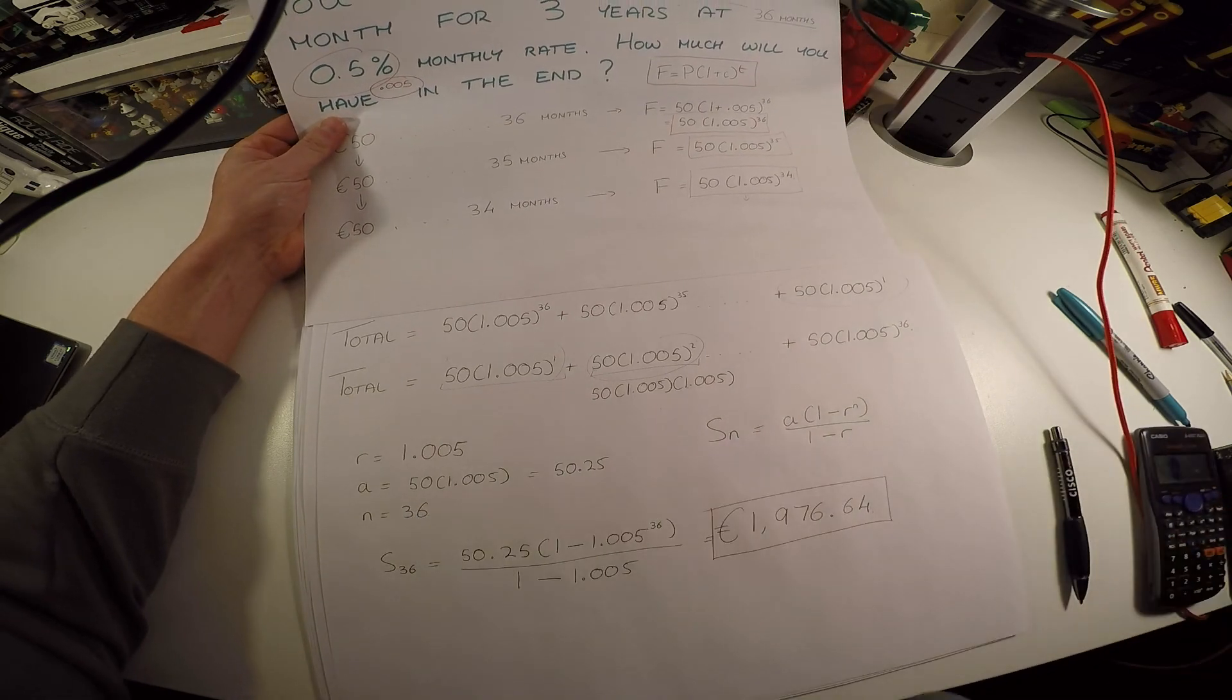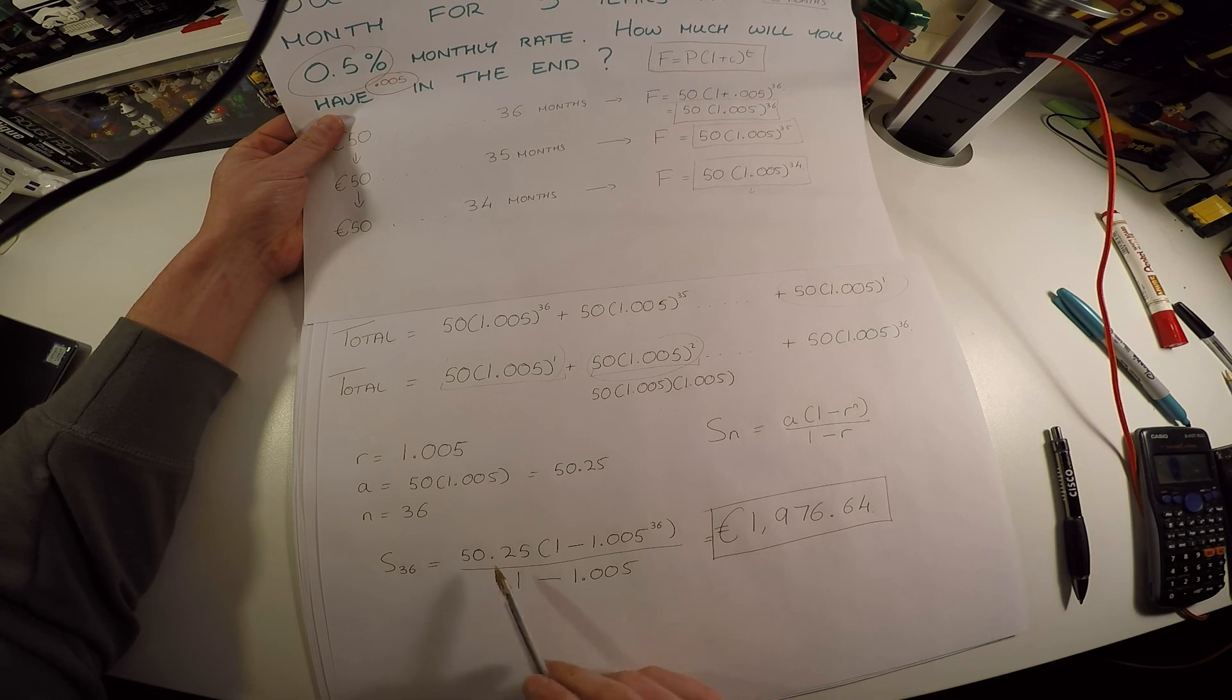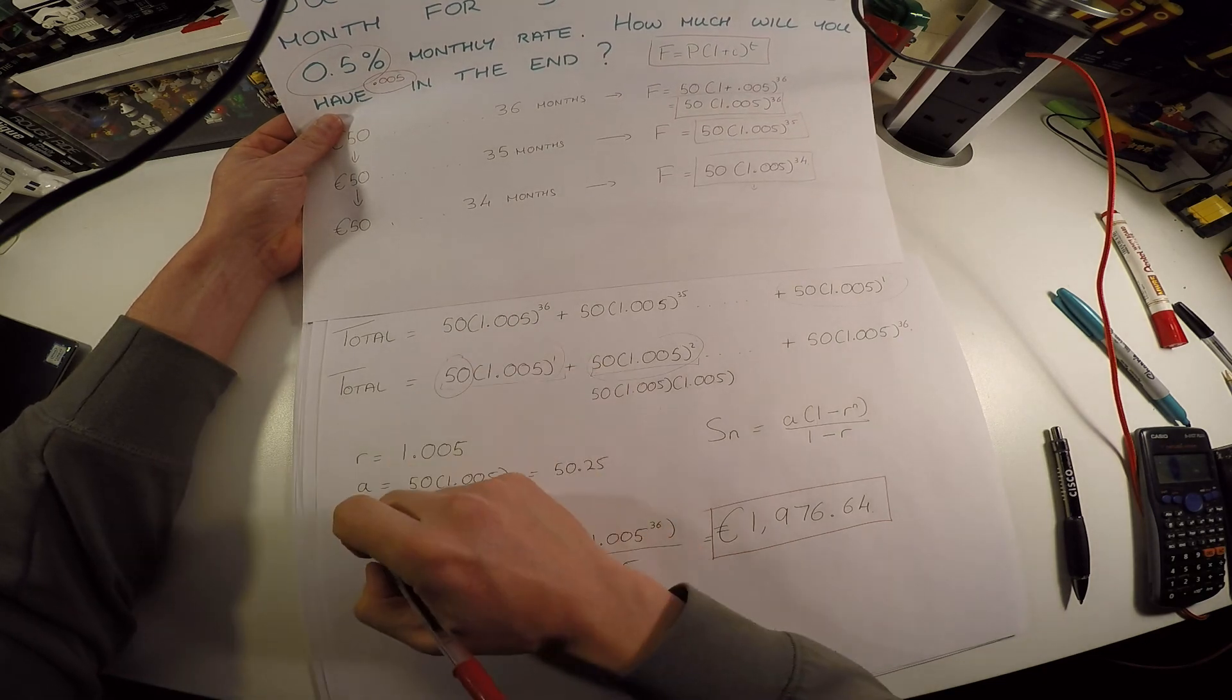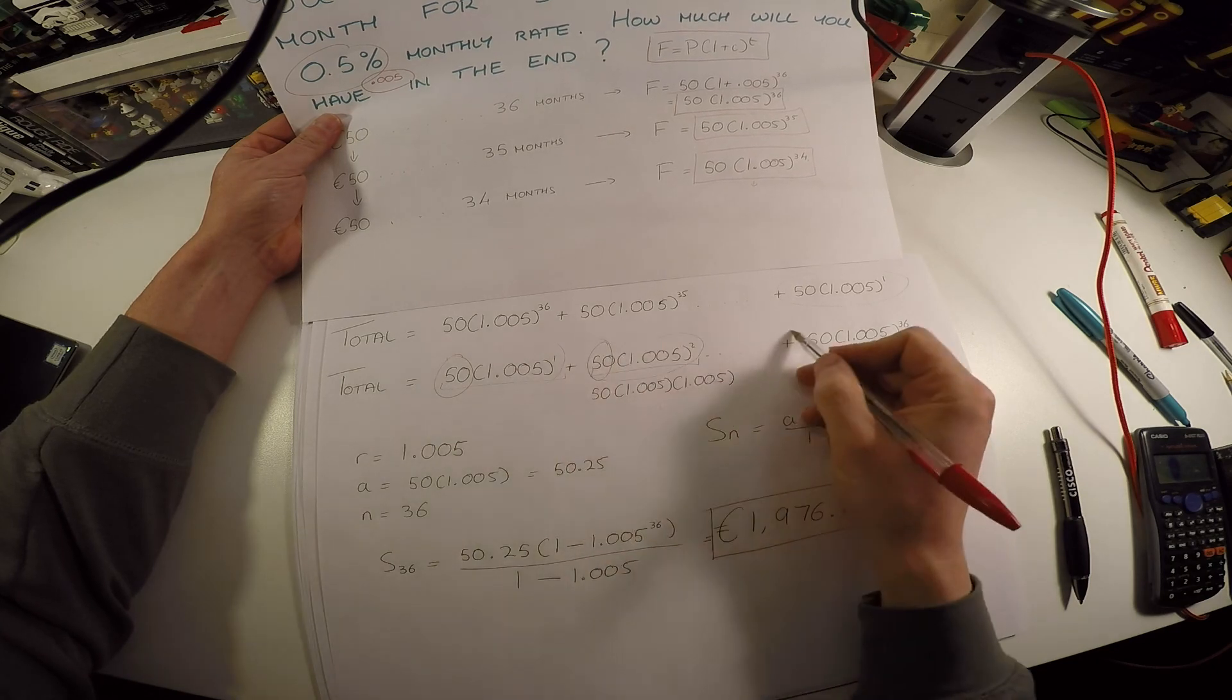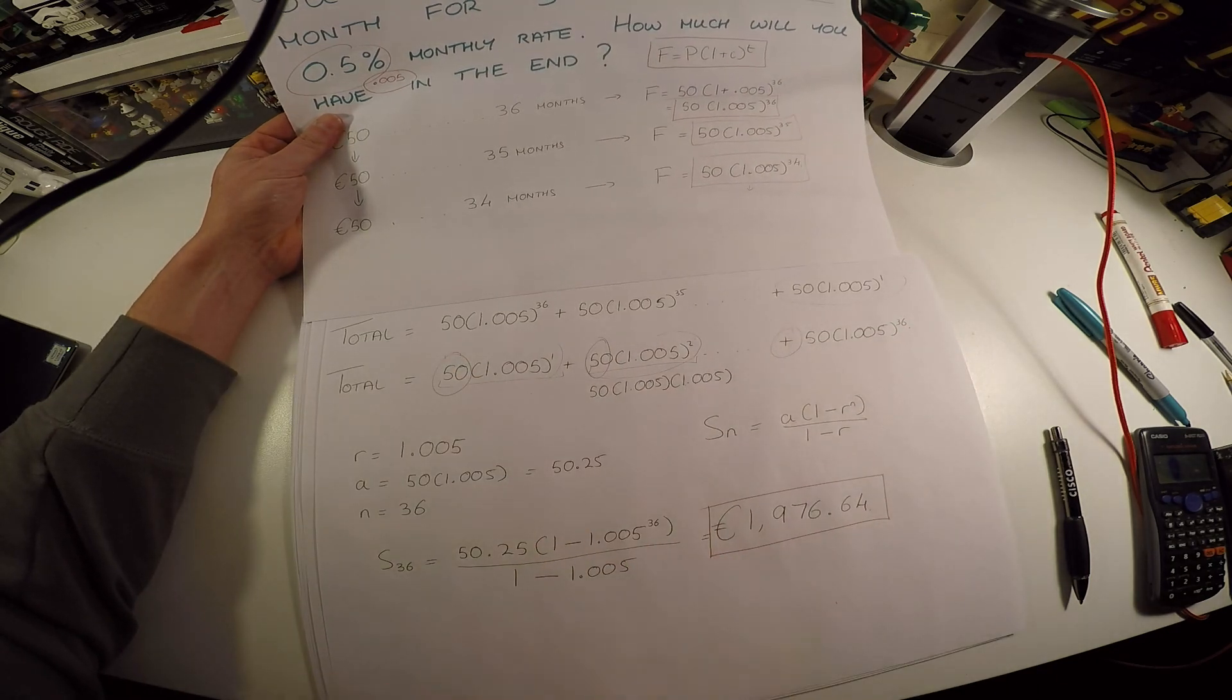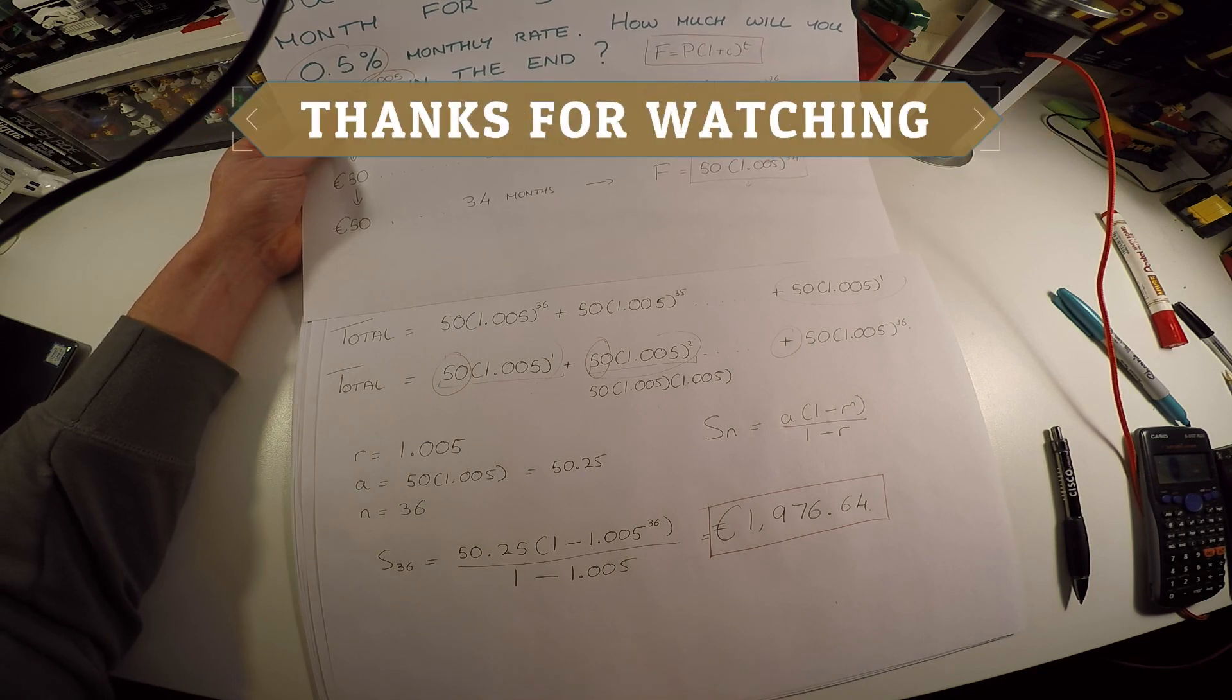The next example I'll do is maybe how to change and how to get how much you'd have to lodge. What would this P need to be for each term to make it equal to some set amount you want to have at the end? But for now, this is just a simple introduction that should get you over the hump.